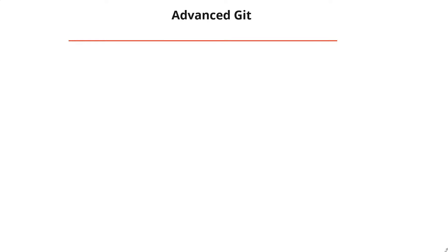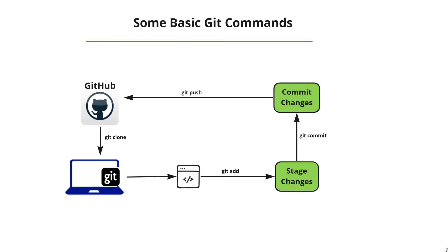To summarize the basic git workflow: first we clone the remote repository into our local machine, which can be a laptop or any other PC that has git installed. Then we make modifications to the code — the first step is to stage the change with git add, and then commit the change.